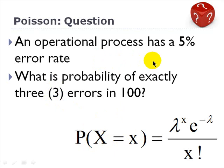And our process is a 5% error rate among 100, so lambda equals 5. That's all we need. We're solving for the probability that our random variable x equals 3 under a Poisson lambda equals 5 distribution.